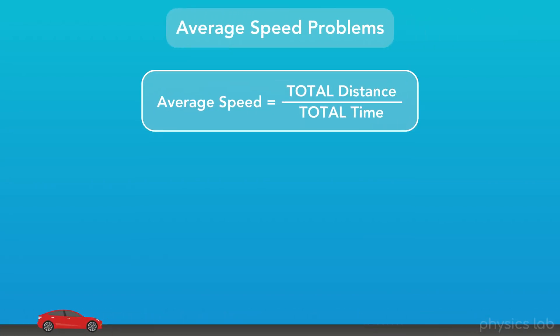Here's our equation for average speed. Average speed equals the total distance traveled divided by the total time it took to travel that distance. I emphasize total because it's an important part of finding average speed.